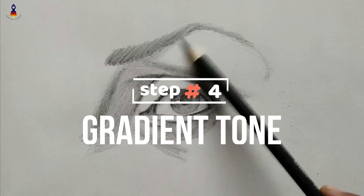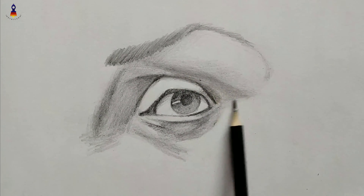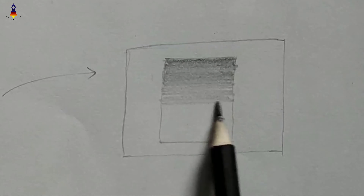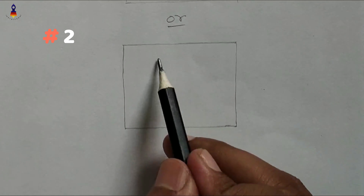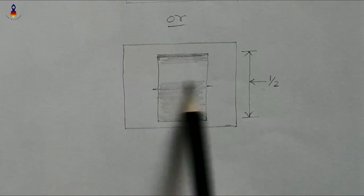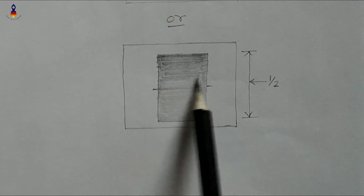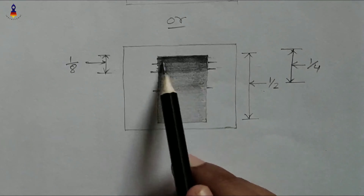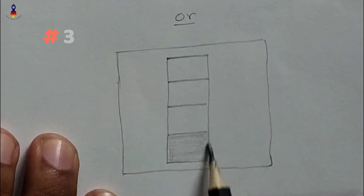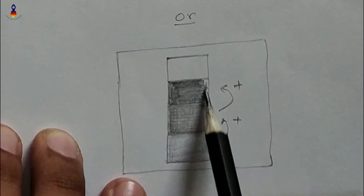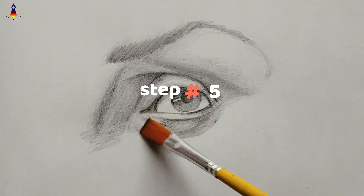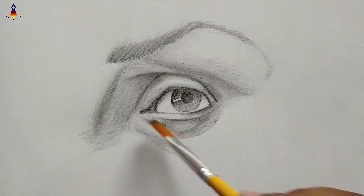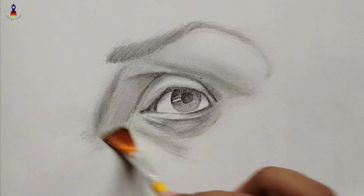Now you have to focus on the fold and the crest of the skin and give a gradient tone. You can give a gradient tone to your drawing in three ways. For blending, you can use blending stumps, blending brushes, a makeup brush, or tissue paper. But I am not using any of these — I am using an ordinary flat watercolor brush.